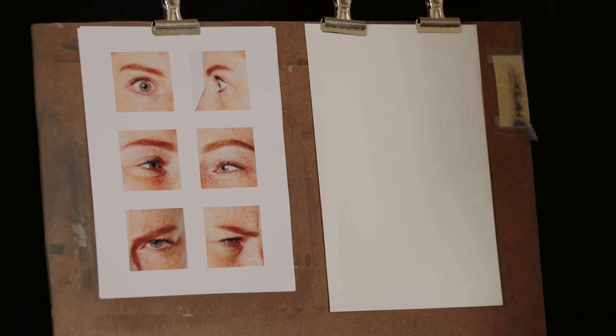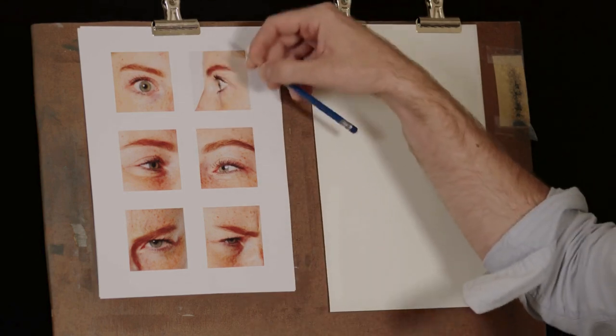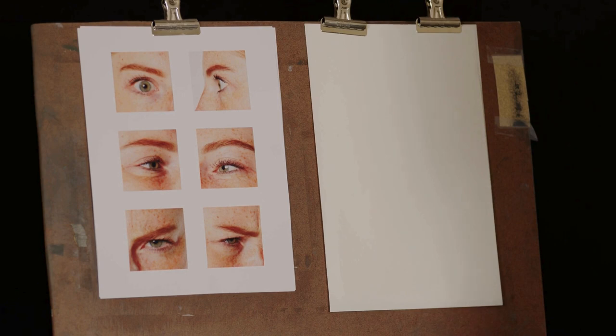Let's take a look at how we begin a block-in. I'm going to start with these references of facial features, eyes in this case. These are a great way to start because they don't throw too much information at us at once, like an entire face. I'll start with the eye here, this one.